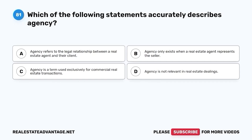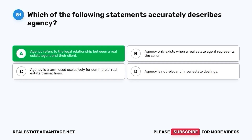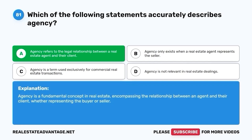Question 81. Which of the following statements accurately describes agency? A. Agency refers to the legal relationship between a real estate agent and their client. B. Agency only exists when a real estate agent represents the seller. C. Agency is a term used exclusively for commercial real estate transactions. D. Agency is not relevant in real estate dealings. The correct answer is A. Agency is a fundamental concept in real estate, prompting the relationship between an agent and their client, whether representing the buyer or seller.